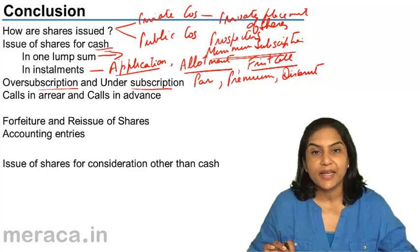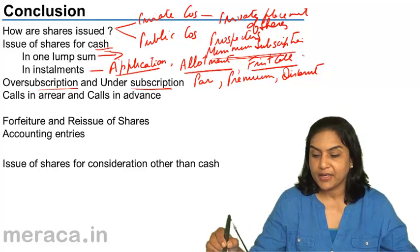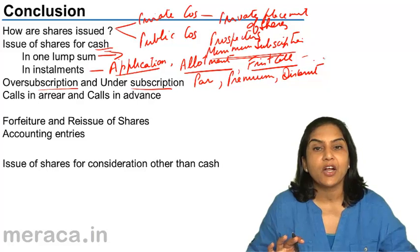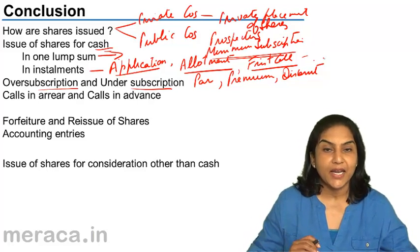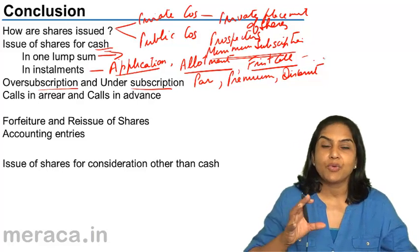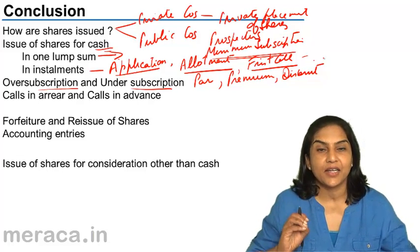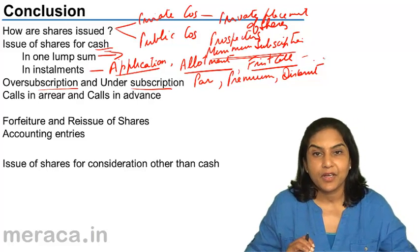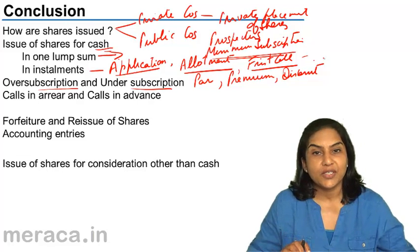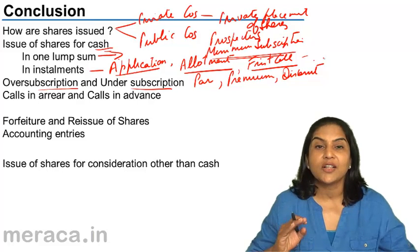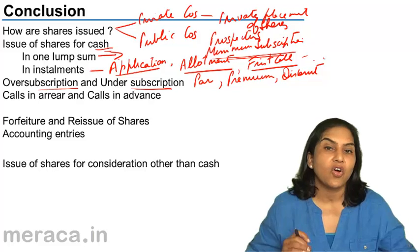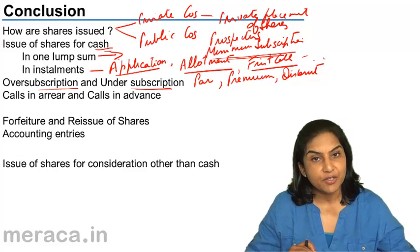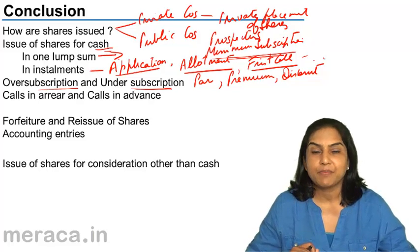We then discussed calls in arrears and calls in advance. Calls in arrears arise when a call is made — first call, second call — and a shareholder does not pay the money due; that unpaid amount is called calls in arrears. If a shareholder pays money in advance, that is calls in advance. In the balance sheet, calls in arrears are deducted from the called-up capital to arrive at the paid-up capital. Calls in advance is not part of share capital; it is adjusted only when the particular call is actually made.